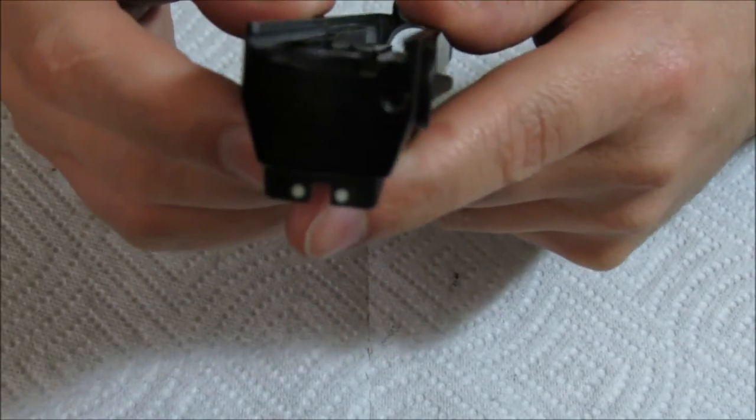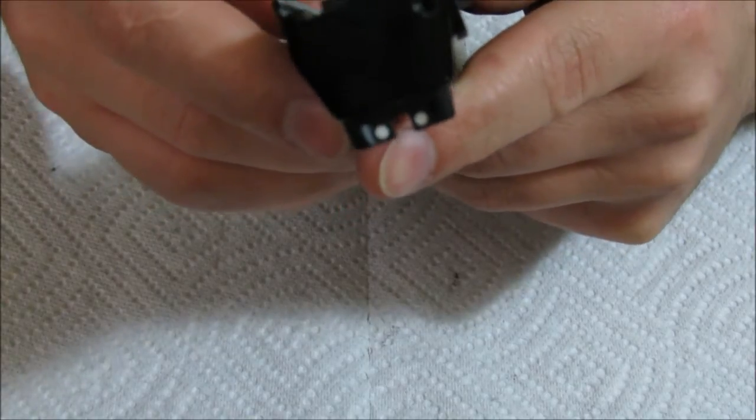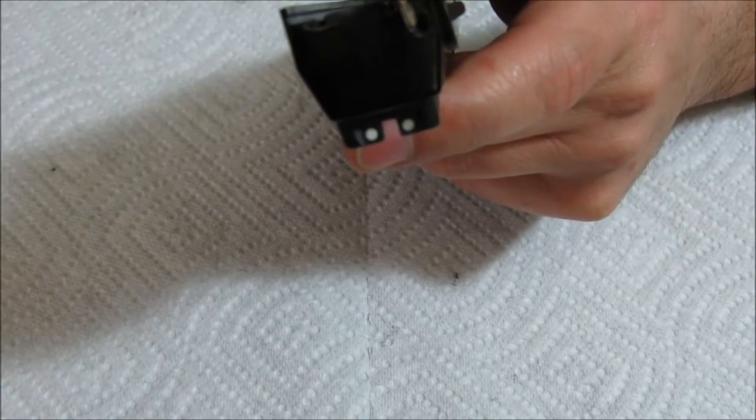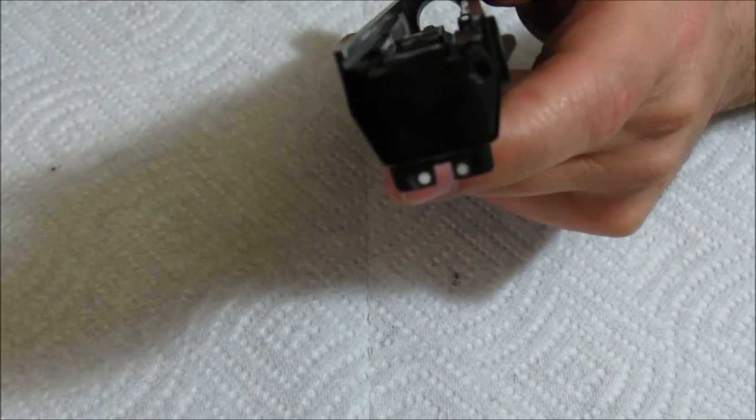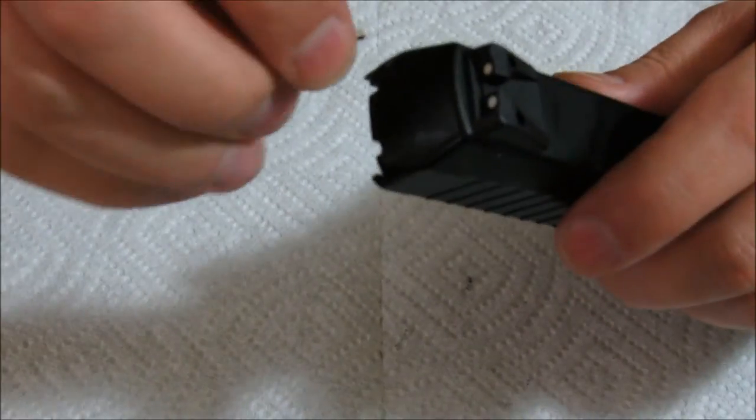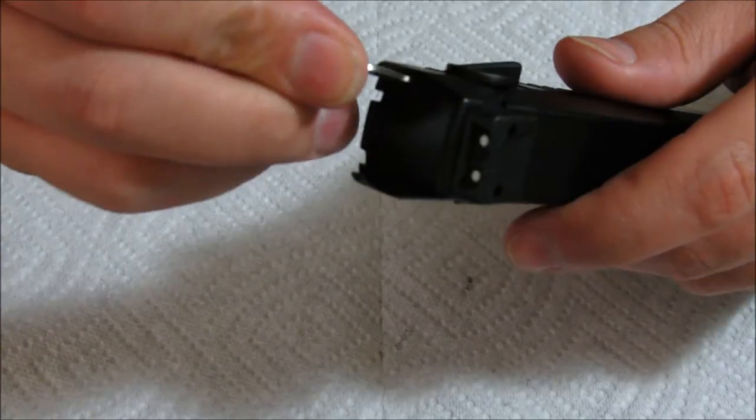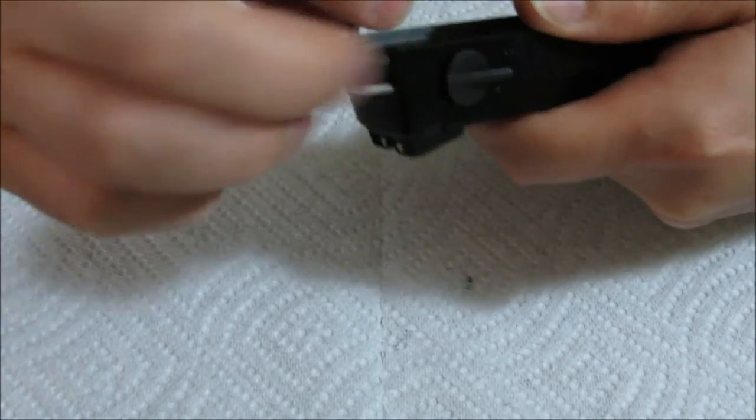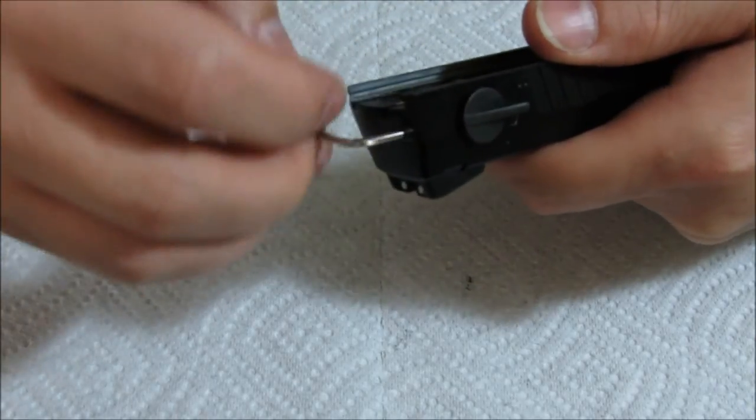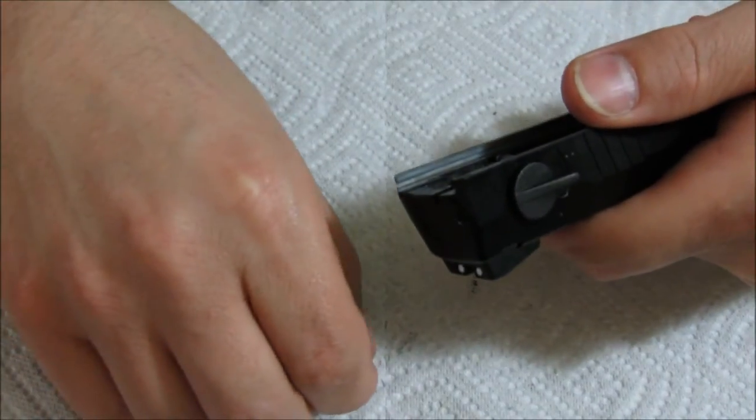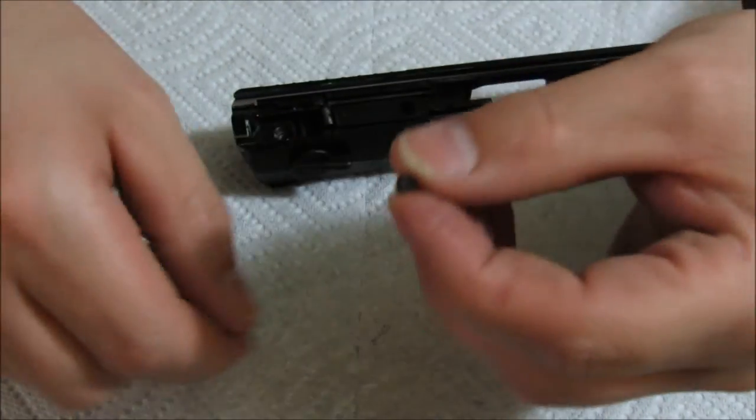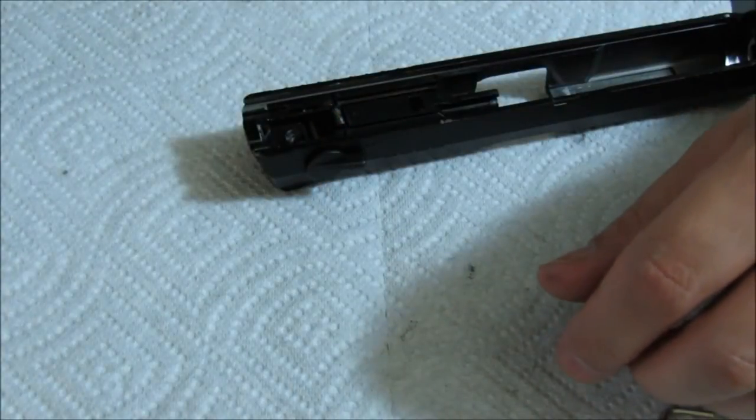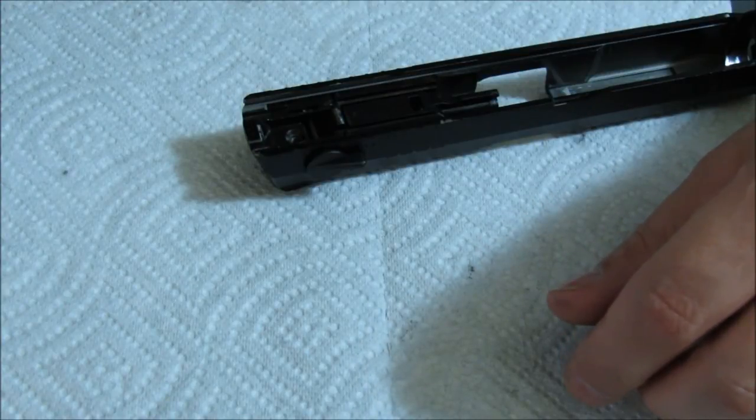All right, now you're going to take off the auto selector retaining screw, which is this right here. I'm going to use an Allen wrench. There's going to be a few small pieces, so you definitely want to keep them aside and in one place.